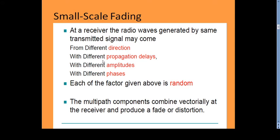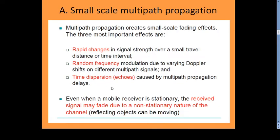At the receiver, the received signal is transmitted from the transmitter in different directions with different propagation delays, different amplitudes, and different phases. Each of these factors is random in nature. Multipath components combine vectorially at the receiver to produce fading or distortion. This is the main reason for small scale fading whenever a radio is moving over a short time or small distance. Multipath propagation creates a small scale fading effect.